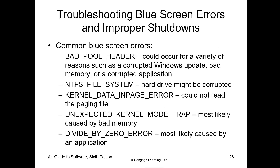Common blue screen errors: Bad pool header could occur for a variety of reasons such as corrupted Windows update, bad memory, or corrupted application. NTFS file system may mean the hard drive is getting corrupted. Kernel data could mean the paging file is messing up. Divide by zero error is caused by an application. These are just some common ones — not all of them.